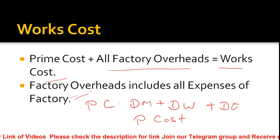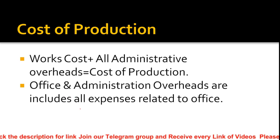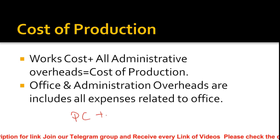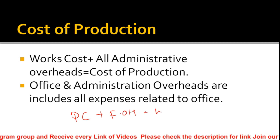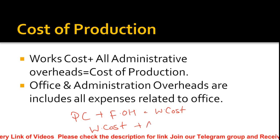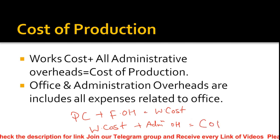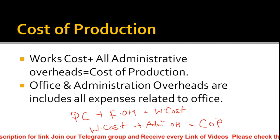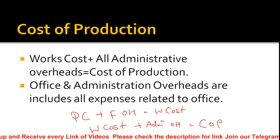Next is cost of production. We have prime cost plus factory overheads, which gives us works cost. Now, if we add administration overheads to works cost, we get cost of production. Administration overheads include all office and administration-related expenses.